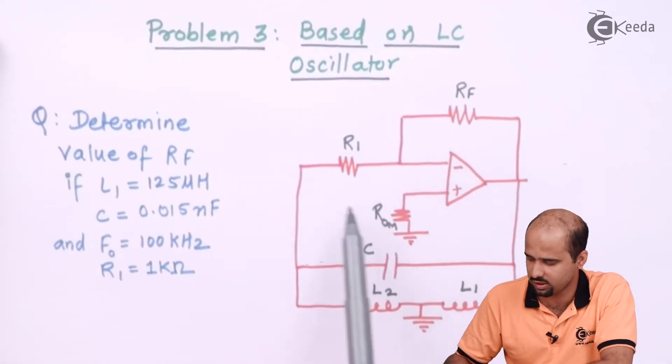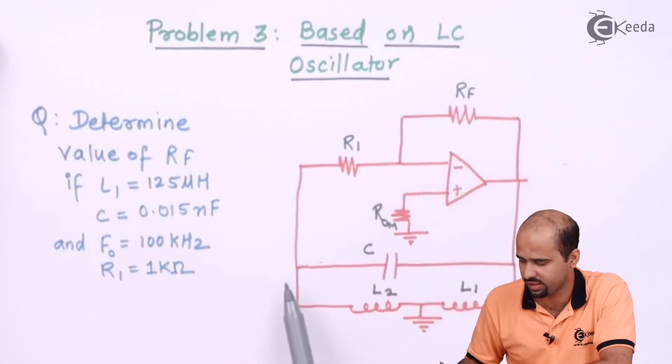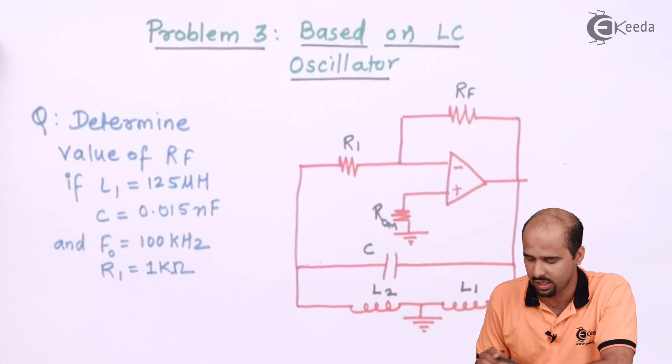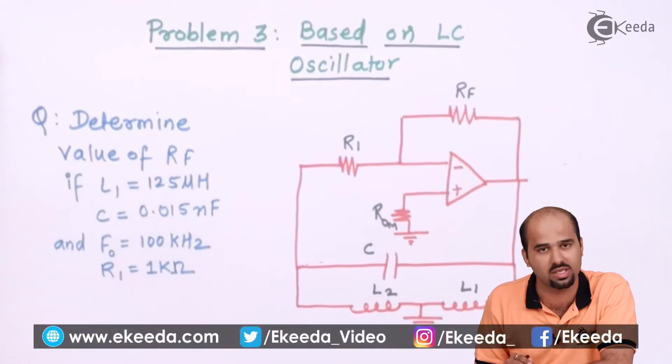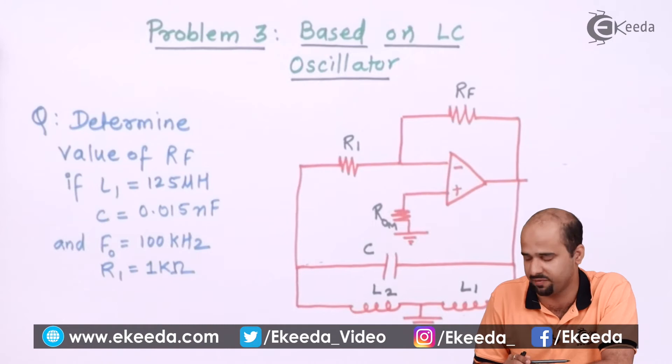This is nothing but your amplifier, forward block amplifier with op amp and this is nothing but the feedback, right? They ask us to find the value of RF and these four parameters are given. L1 is given, C is given, R1 is given and F0 that is frequency of oscillation is given.